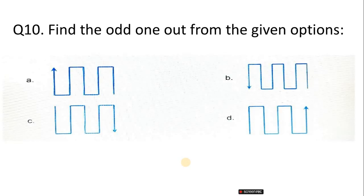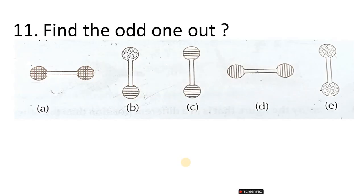Question 10. Find the odd one out from the given option. Question 11. Find the odd one out. Correct answer is option B.